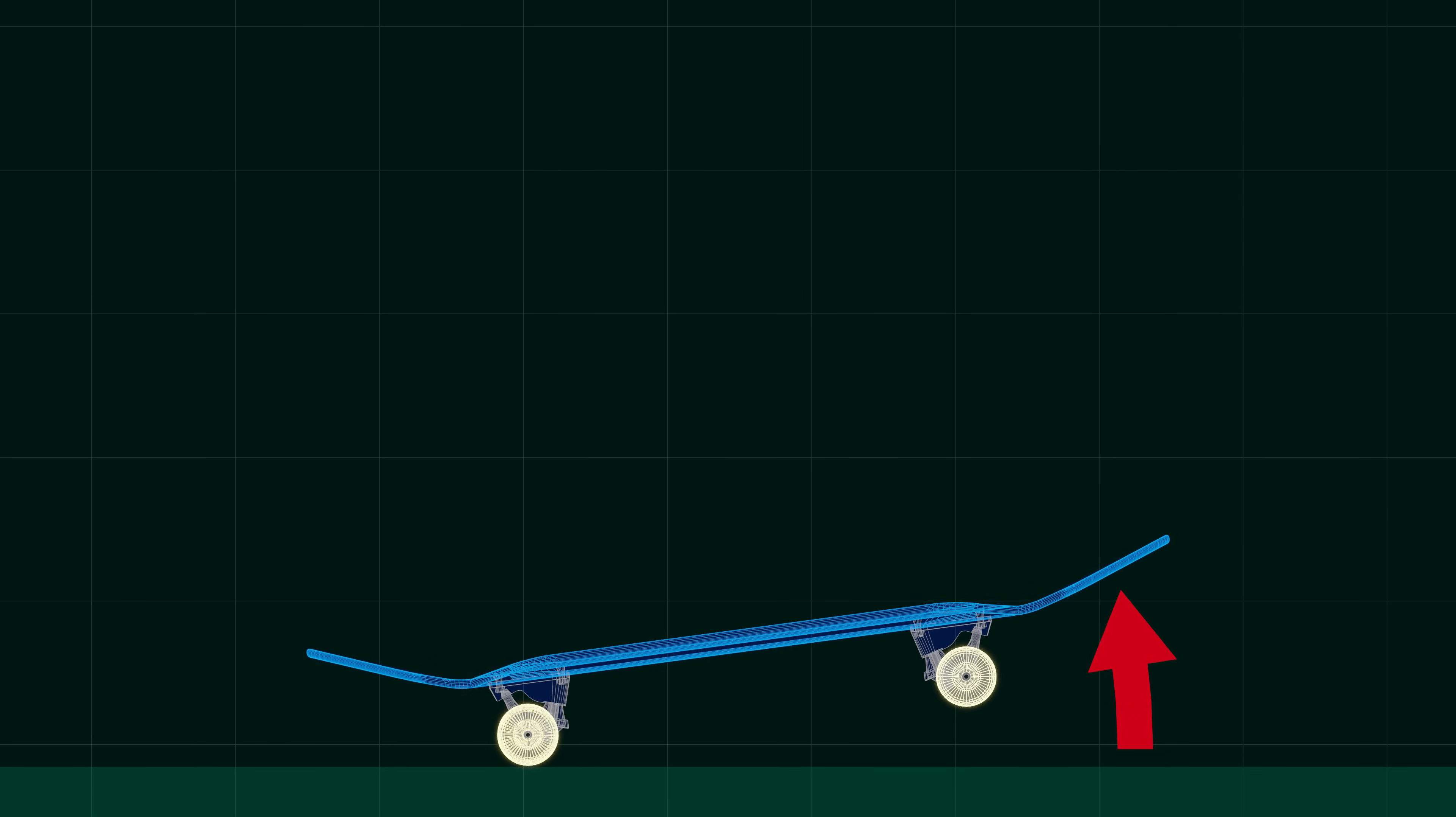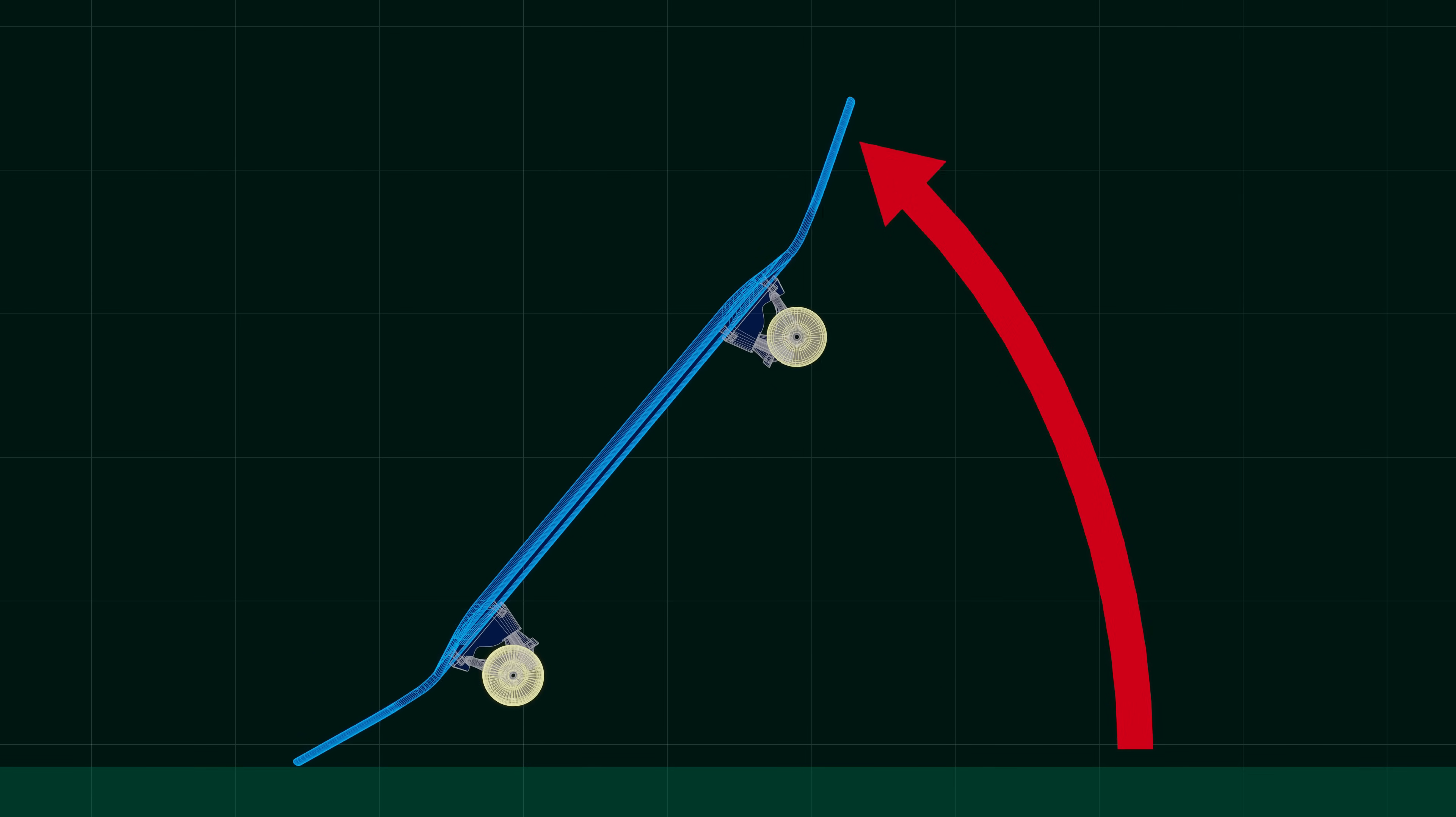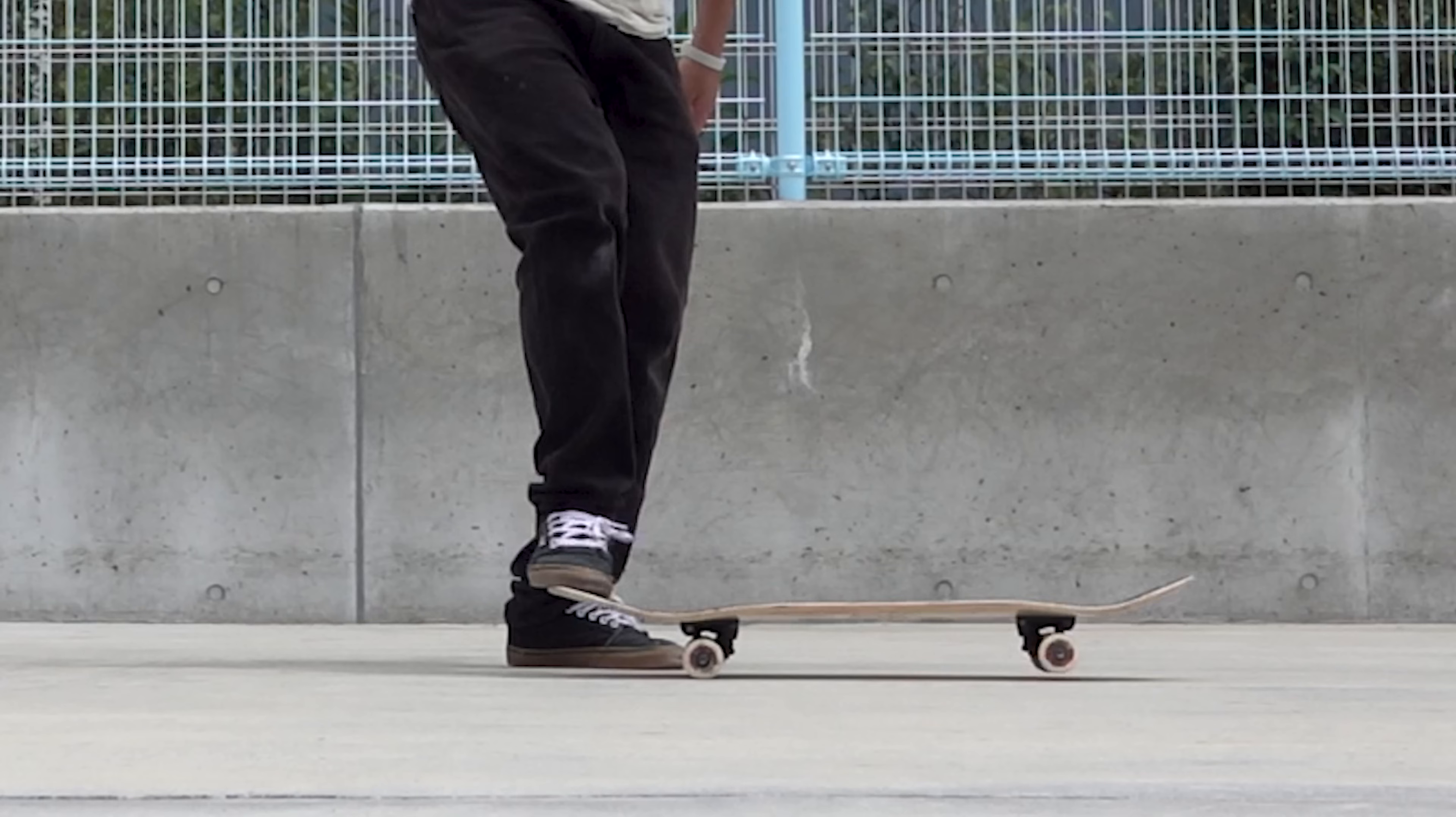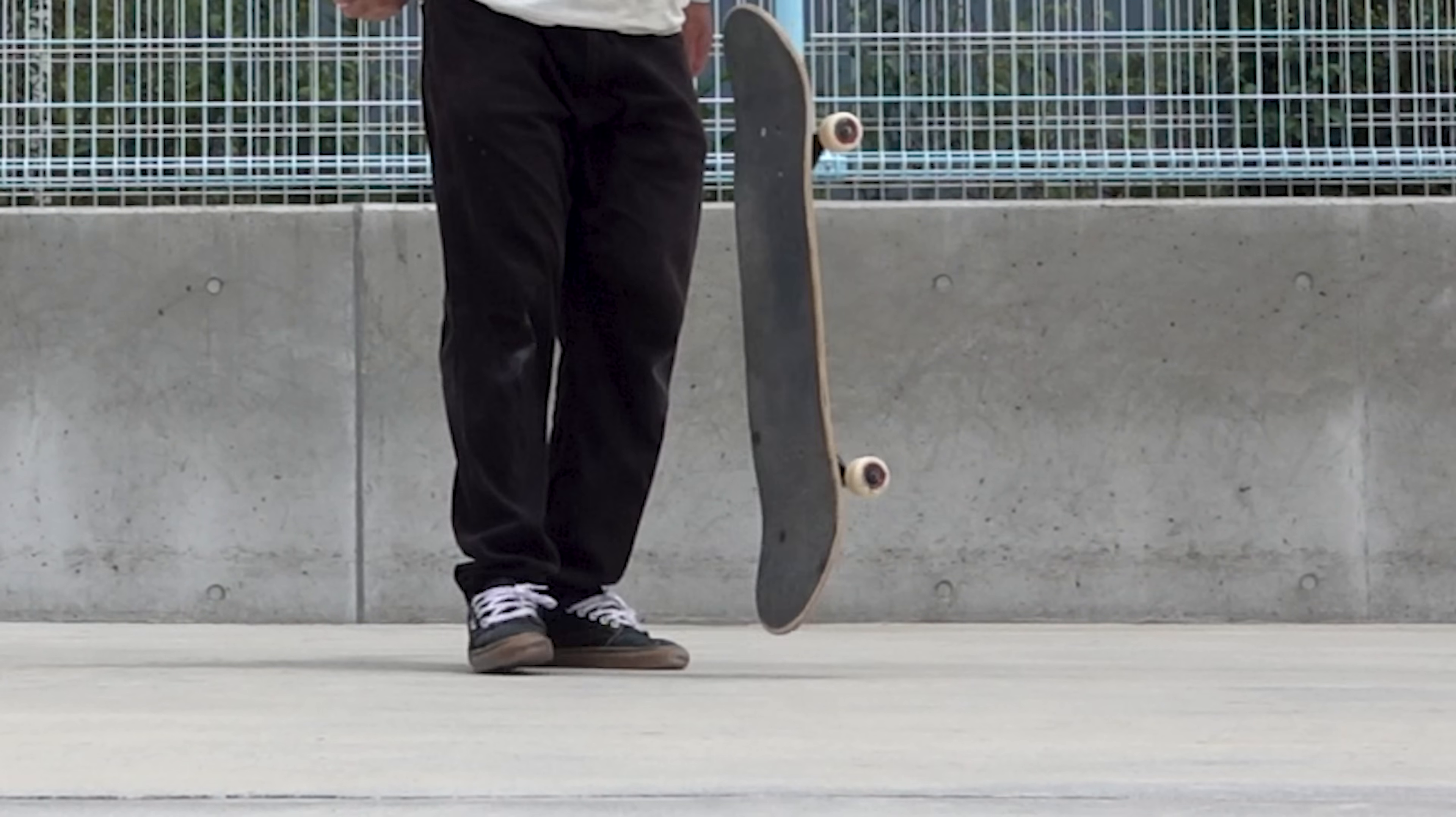The primary role of the tail is to act as a pivot point, allowing the board to raise its angle. No matter how hard you pop, the board will not rise much, and your weight will not rise due to the force of the board rising.